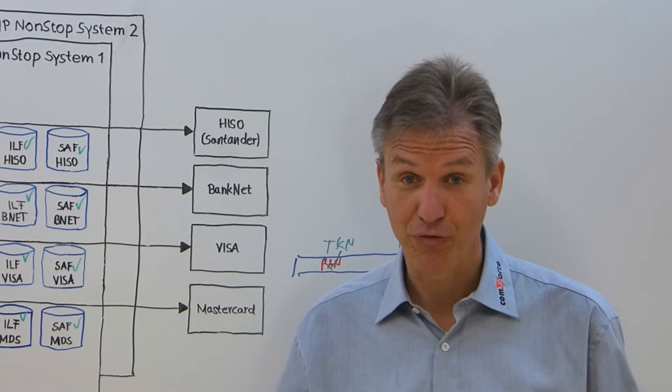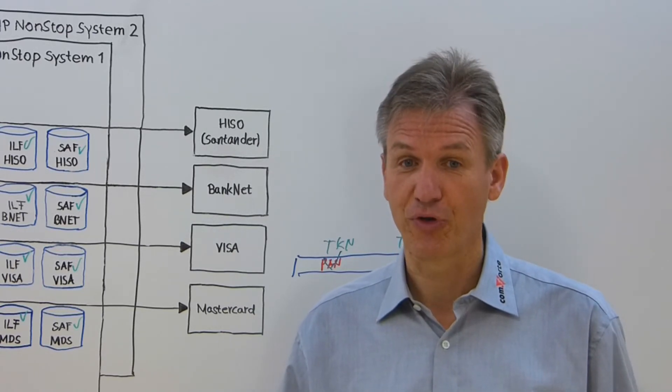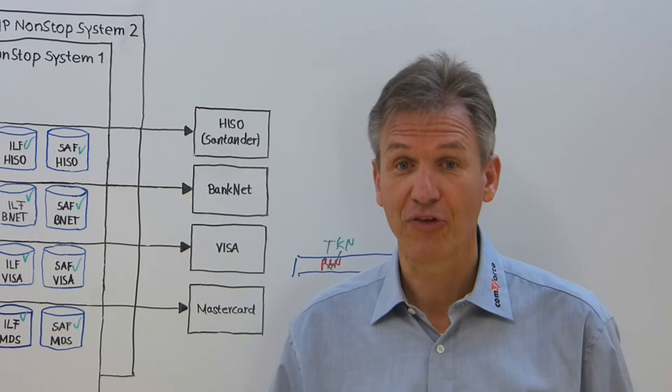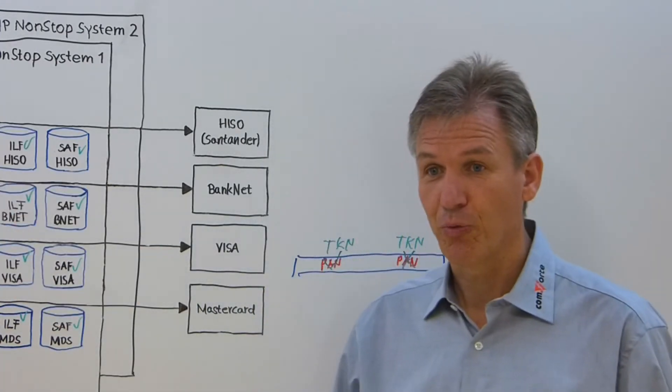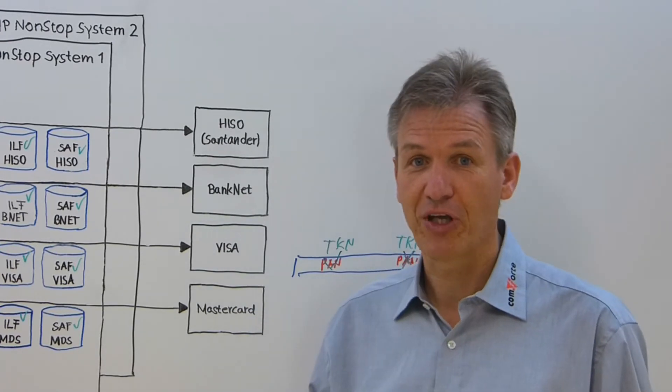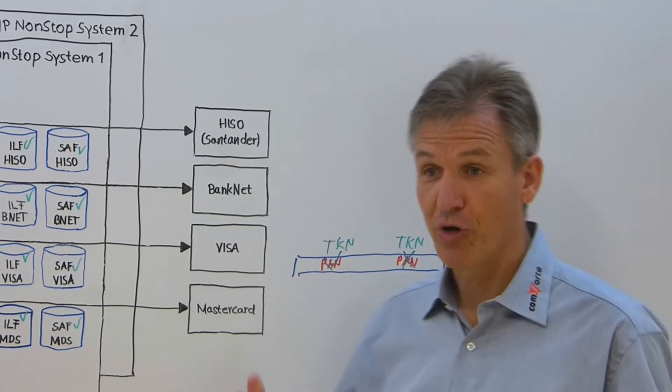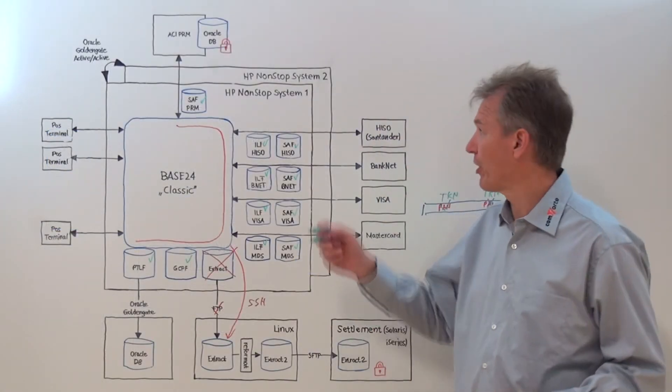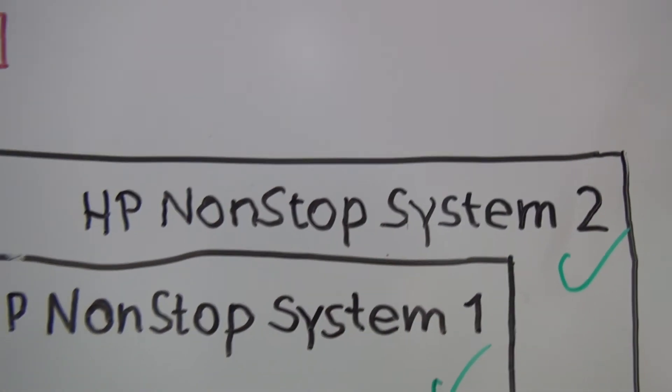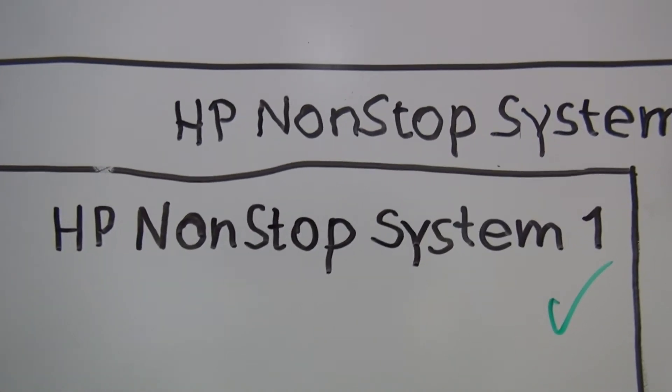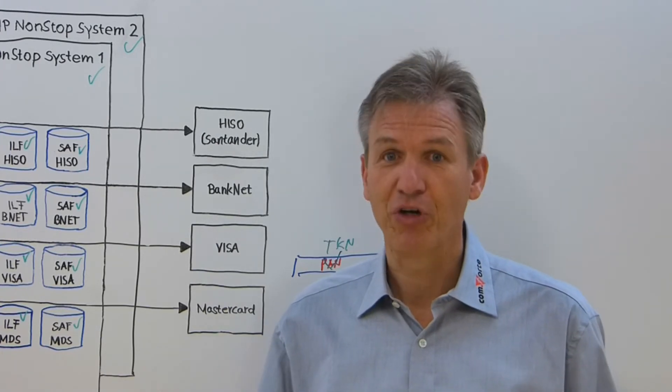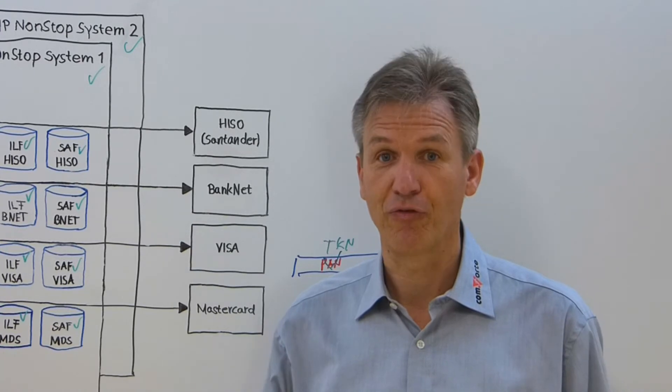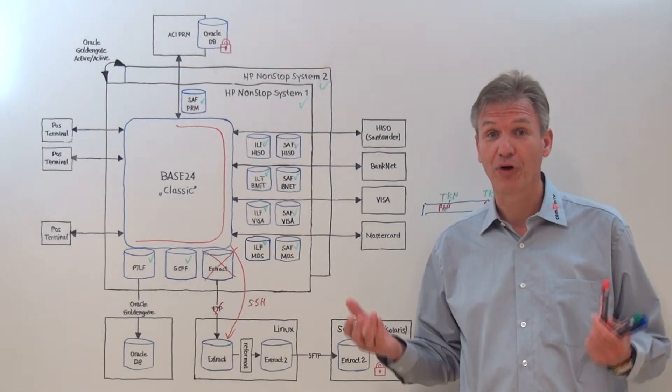But what about the BASE24 files on the backup non-stop server? SecureData supports that as well. It works seamlessly with any disaster recovery solution, like Oracle GoldenGate in this case. The records with the tokens are replicated to the second non-stop server. On the second non-stop server, you have an exact copy of SecureData running, so you have that second system protected as well. Please note that SecureData uses a stateless tokenization engine. That means you don't have to worry about any collisions or the performance of the overall solution. Now we have protected all the files on the non-stop server.